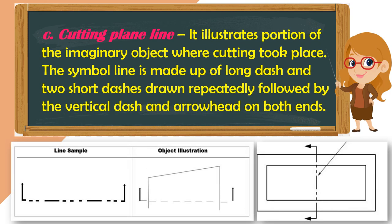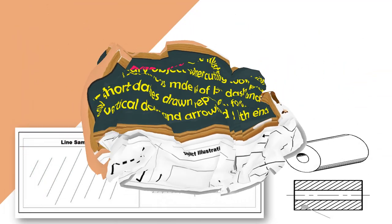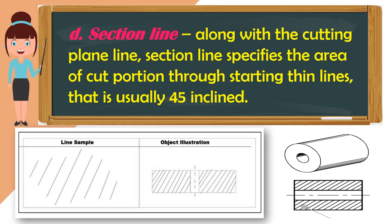Next is the cutting plane line. The cutting plane line illustrates the portion of an imaginary object where cutting took place. The symbol is made up of long dashes and two short dashes drawn repeatedly, followed by a vertical dash and arrowheads on both ends. Along with the cutting plane line, the section line specifies the actual cut portion through thin lines that are usually inclined at 45 degrees.